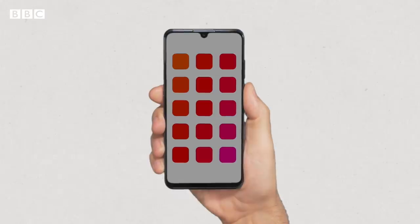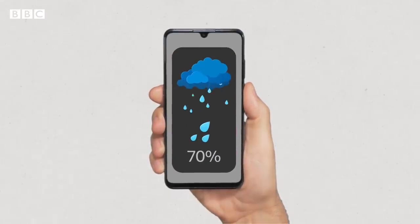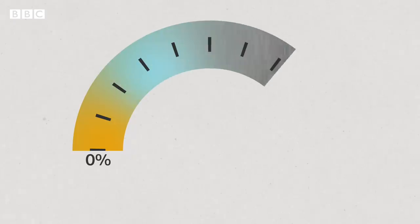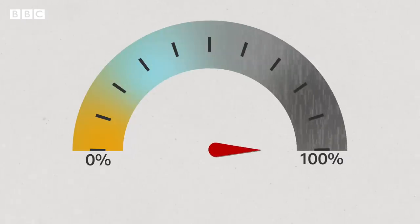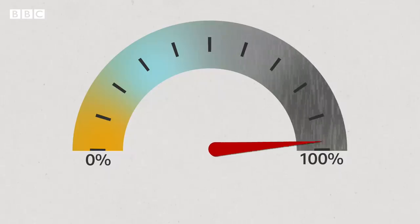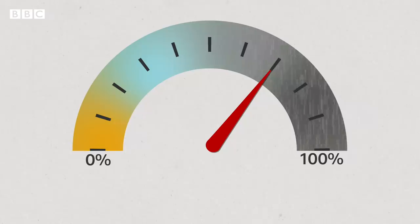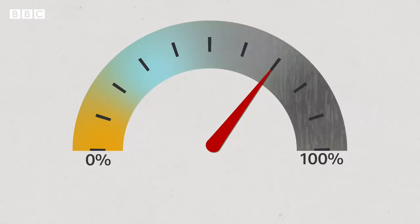You check the forecast for tomorrow and it shows a rain cloud with 70% by its side. Most of us would think it's going to rain because 70% is a high number, right? But what that 70% is actually telling you is how certain you should be of that forecast. It's just a number on a scale from 0 to 100%, and only 100% would mean that it will definitely, without a doubt, rain at some point during the day. 70% tells you that rain is likely, that you should expect it, but things could still change.